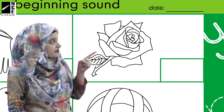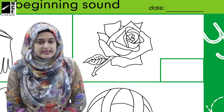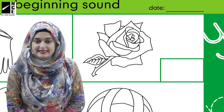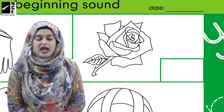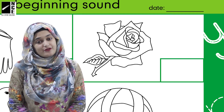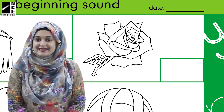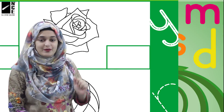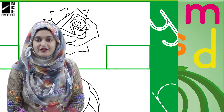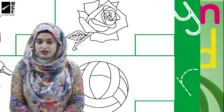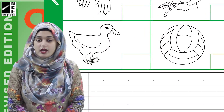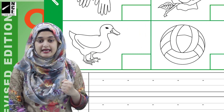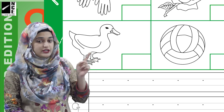Then we have a picture of a flower. What is this flower called? We call it a rose. And what is the beginning sound of rose? It is R. So write R in this small box given over here. Then we have the picture of a duck and a ball. You have to think of the beginning sound and write it in the box given in each picture.